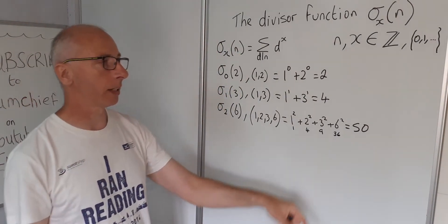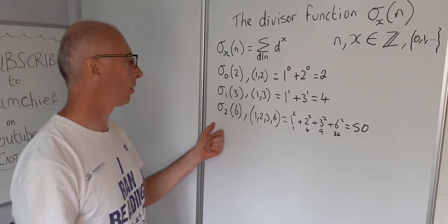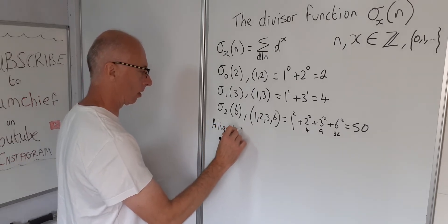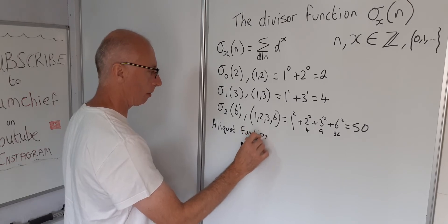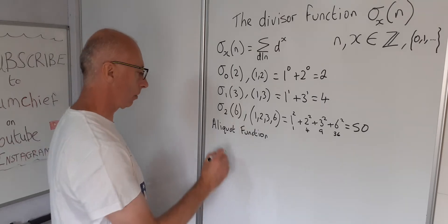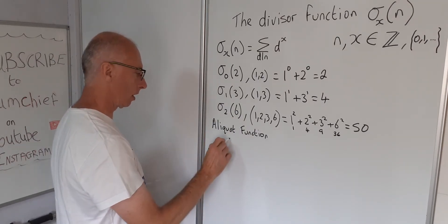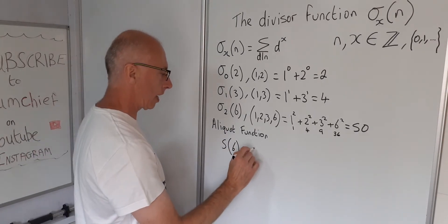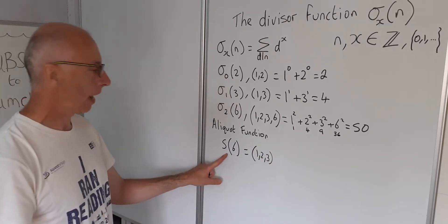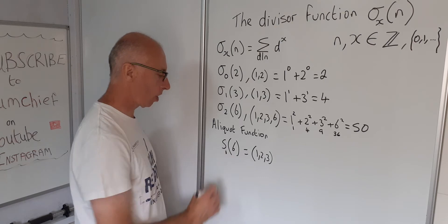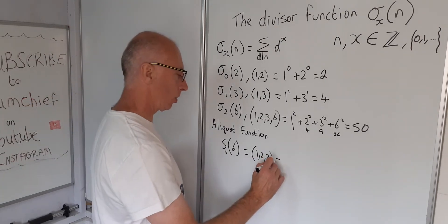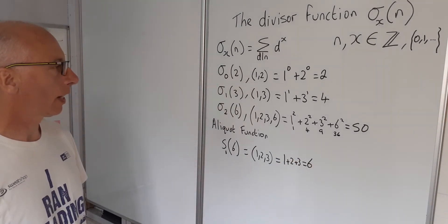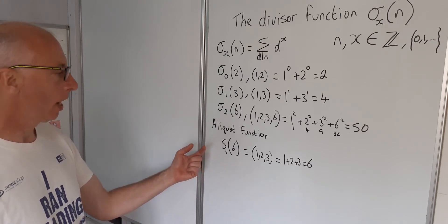There's a slight variation on the divisor function called the aliquot function. It's the same as the divisor function except it doesn't include the number itself. For example, s(6) uses divisors 1, 2, and 3 only — not 6 — and the exponent is always 1, giving 1 plus 2 plus 3, which equals 6.